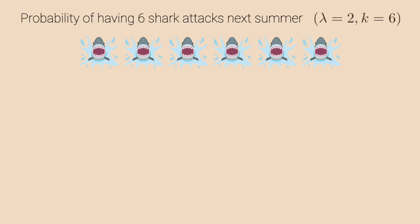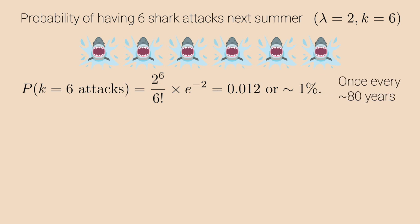Assuming there are 2 average shark attacks per summer, then the probability of having 6 shark attacks next summer is obtained by plugging in lambda equal to 2 and k equal to 6 into the Poisson formula and it gives probability of 6 attacks as 1%. This means that 6 shark attacks are highly unlikely to happen in 1 year, although this would happen once every 80 years.